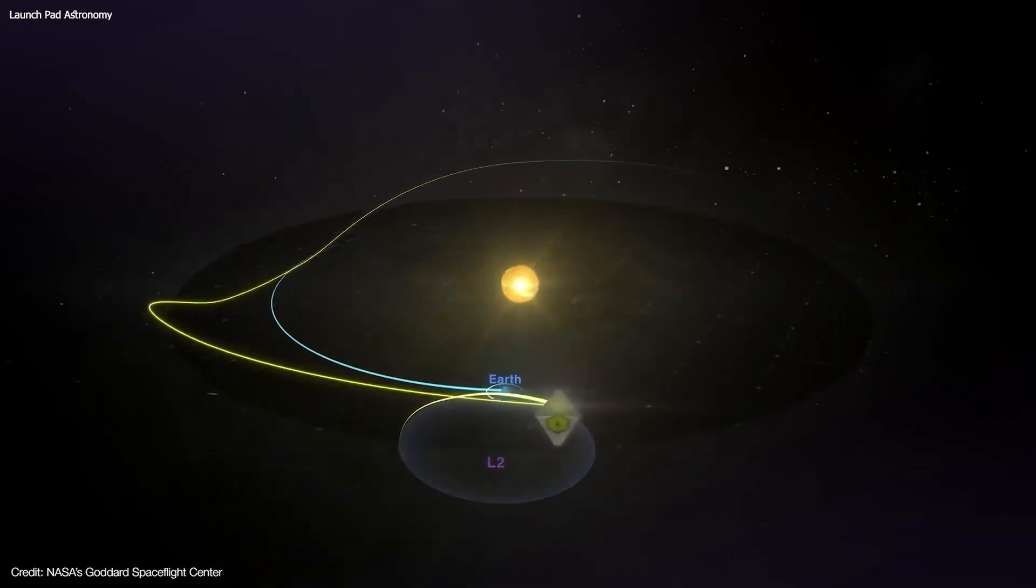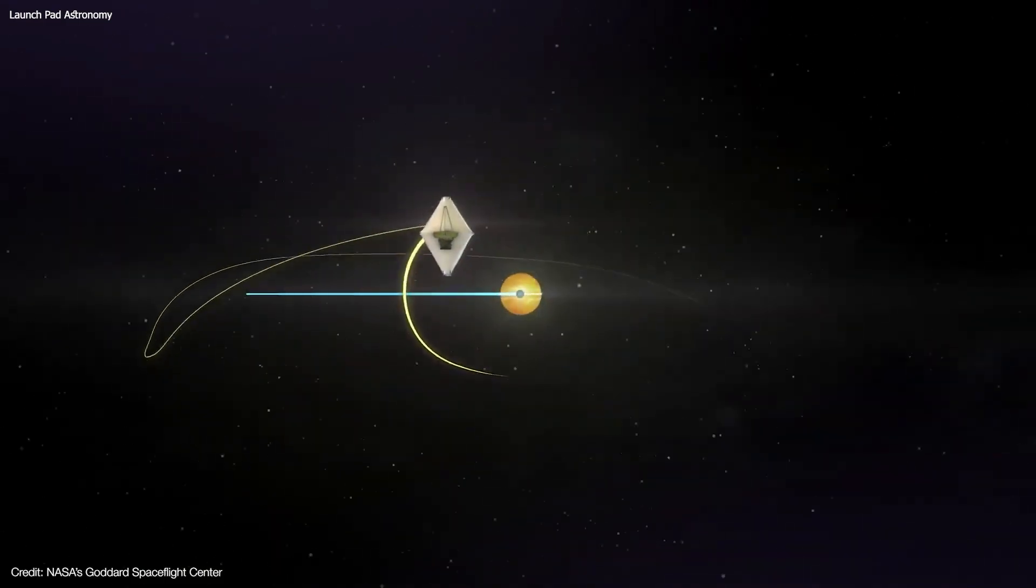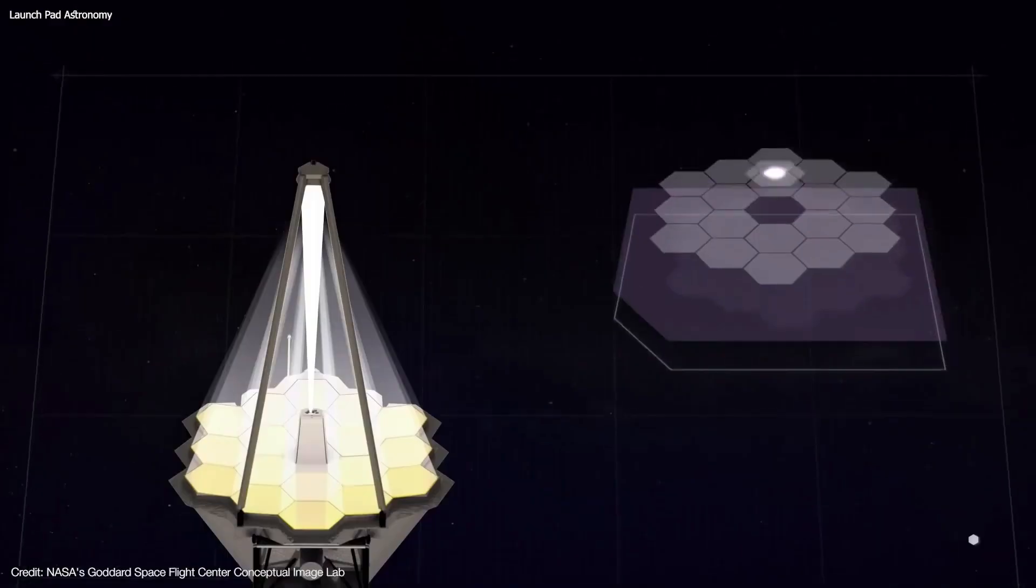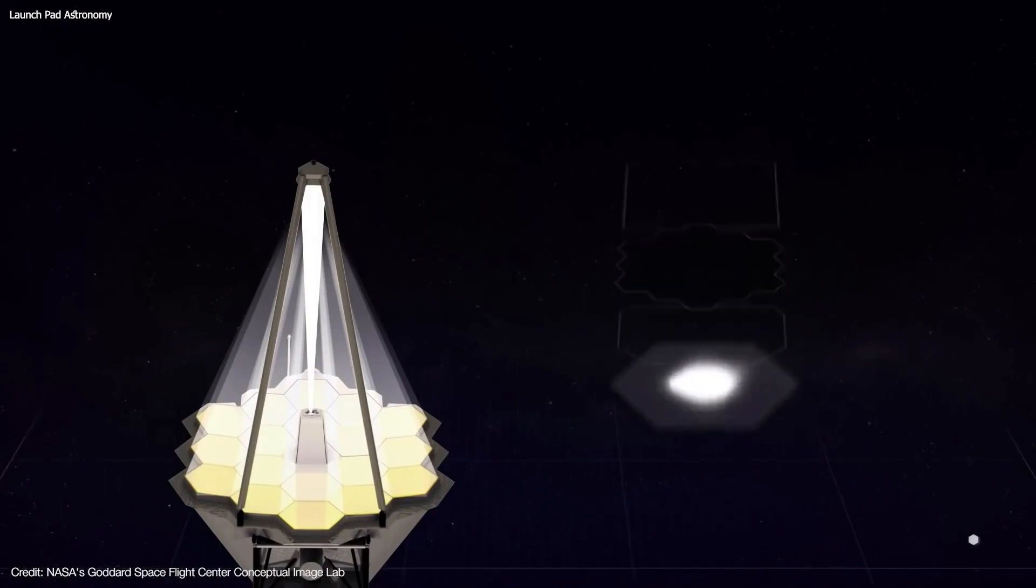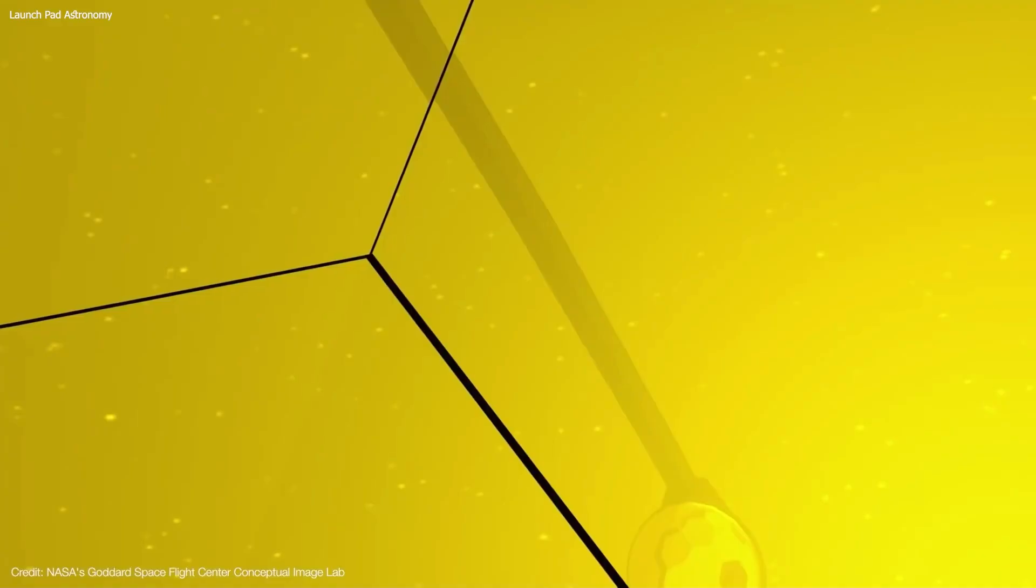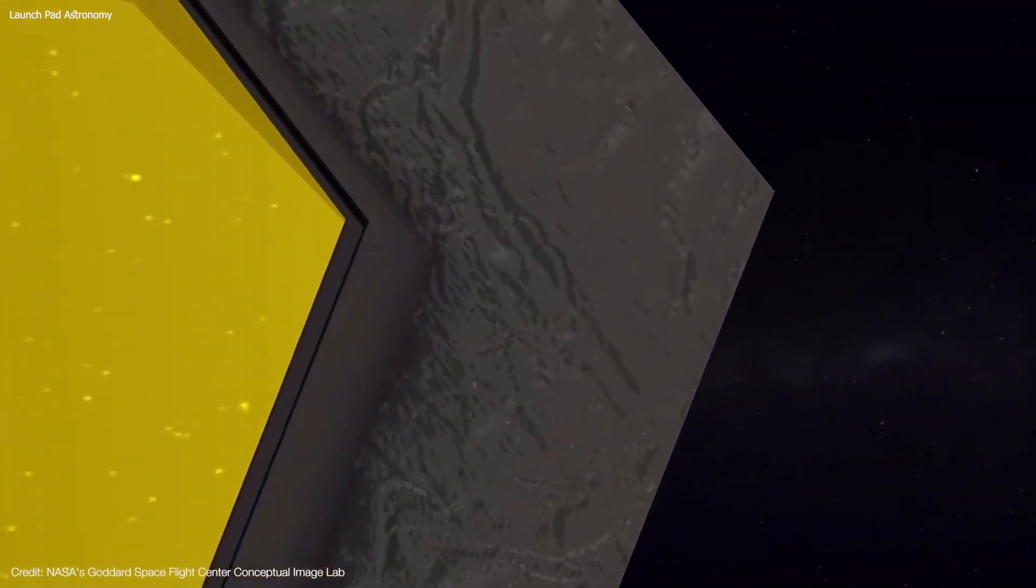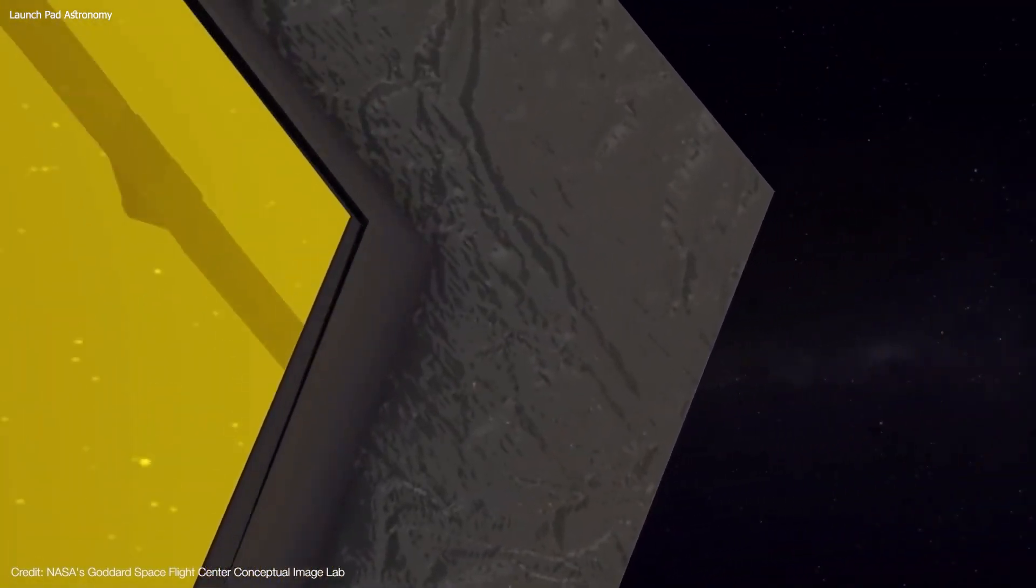Once all that's done, we had the membrane tensioning, where the sun shield and mid-booms are deployed, and the sun shield is tensioned to separate its five layers. But it doesn't really end here. The James Webb telescope had to undergo several major steps as it was deployed in space.